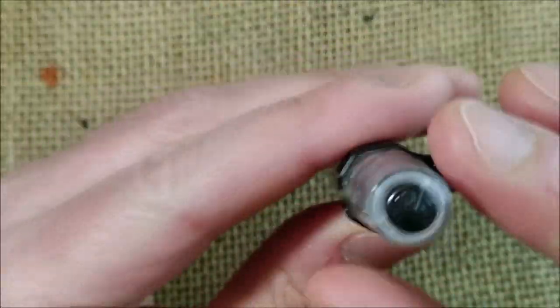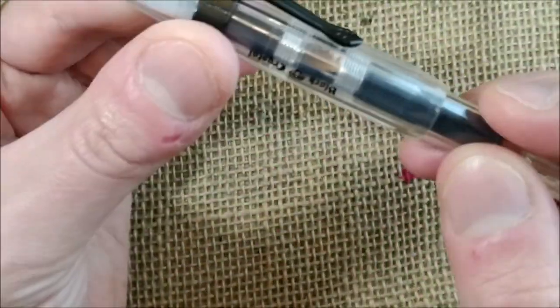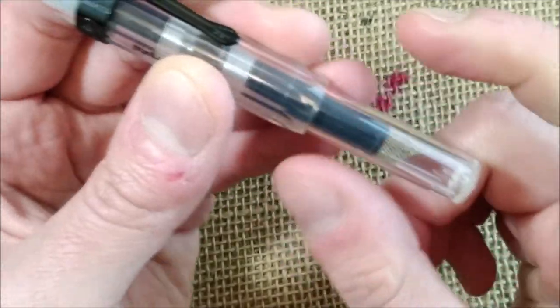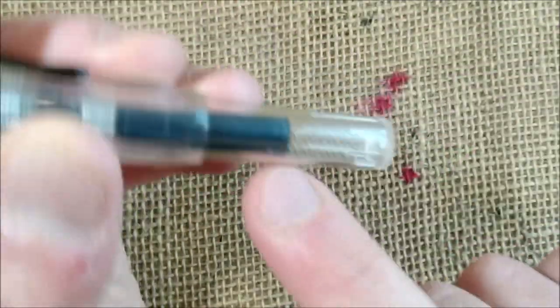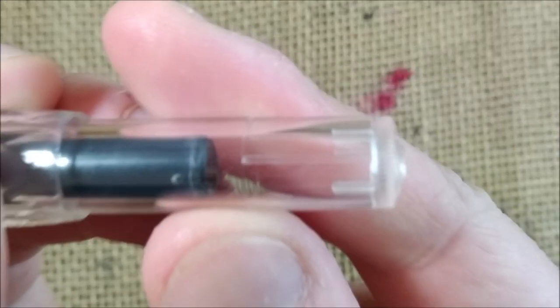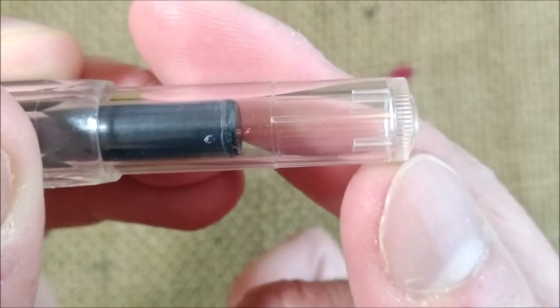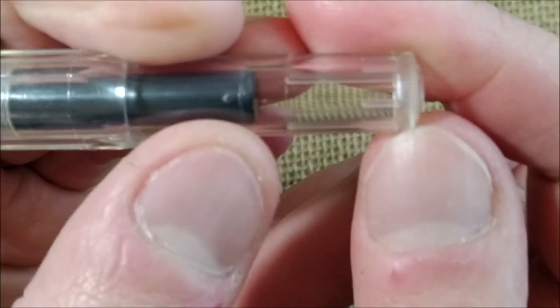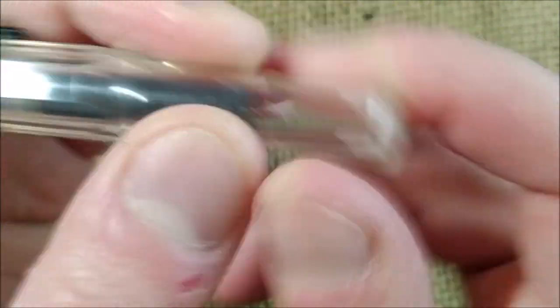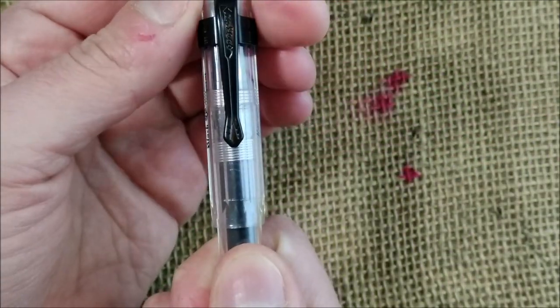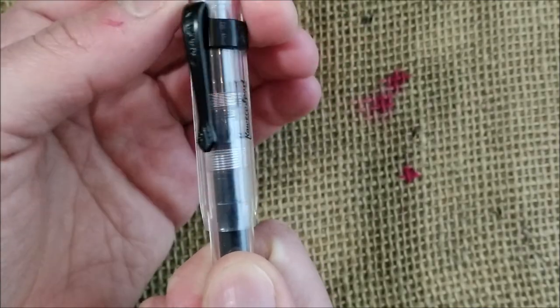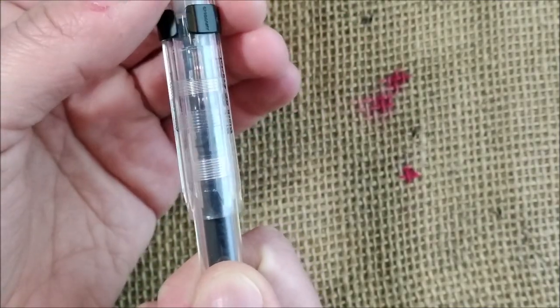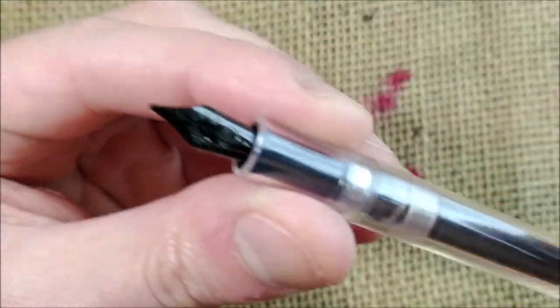The cap has that octagonal shape as I told you. And you have a cylindrical barrel that has a little step down there and then it continues. When you have the pen like this it uncaps by unscrewing with one turn, one turn and one quarter. And inside you have a black nib.